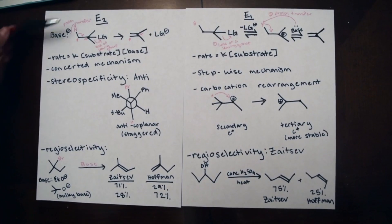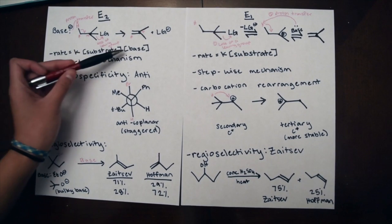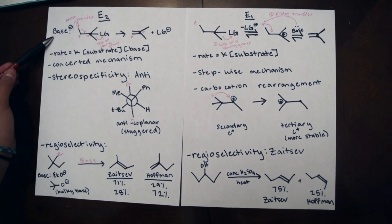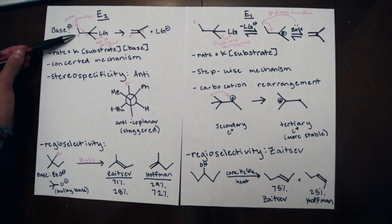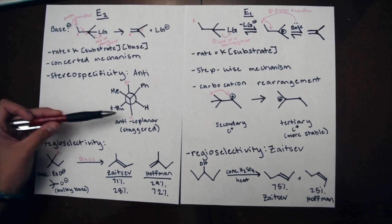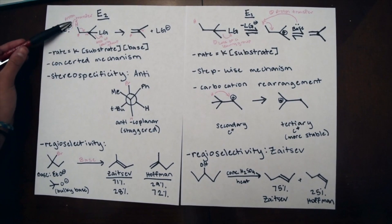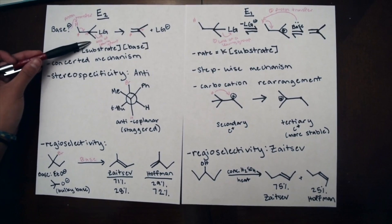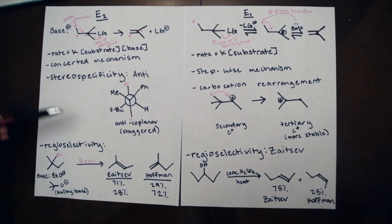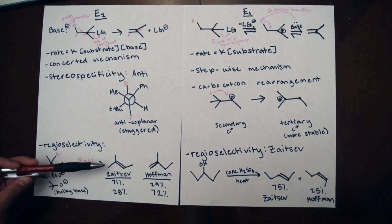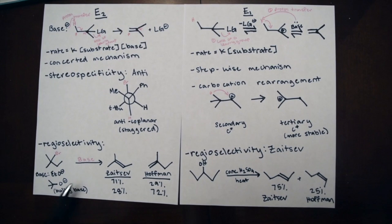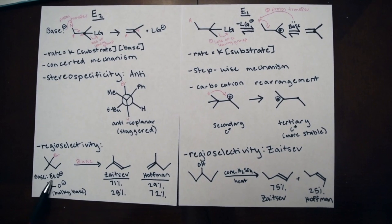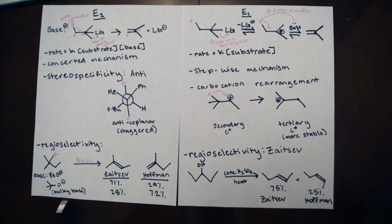An E2 reaction is a bimolecular concerted mechanism where the rate depends on the substrate and the base. In E2, the reagent functions as a base, removing the proton from the beta carbon that is anti to the leaving group in a process called proton transfer, causing the loss of a leaving group. The products of E2 will favor a pi bond between the more substituted beta carbon and alpha carbon, known as the Zaitsev product when using a non-bulky base.